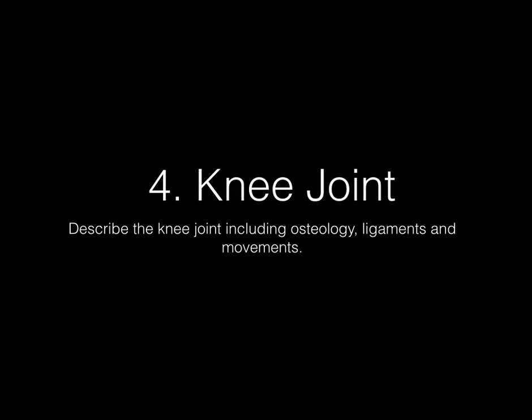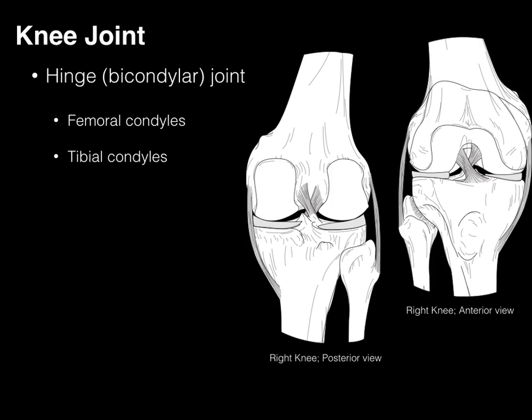We now move on to the knee joint, where we'll describe the knee joint including its osteology, ligaments, and its movements. The knee joint is a synovial joint. It's considered a hinge joint or a bicondylar joint.